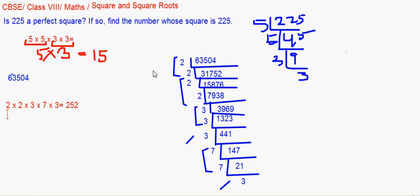You might come across numbers which are not perfect squares. In such cases, when you express the number as a product of prime factors, you will find one or more factors that don't have a pair. Let's take one such example.